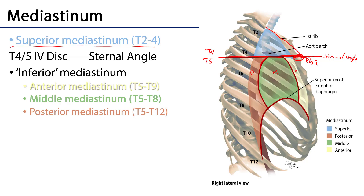These divisions are all based on the pericardium. The pericardium here is outlined in red, and wherever the pericardium is, that represents the middle mediastinum. Anything anterior to the pericardium is the anterior mediastinum. Anything posterior to the pericardium is the posterior mediastinum. The diaphragm is a rather arching structure — it doesn't go flat across as many people presuppose — and so that posterior mediastinum has a significant amount of depth compared to the middle or the anterior mediastinum.